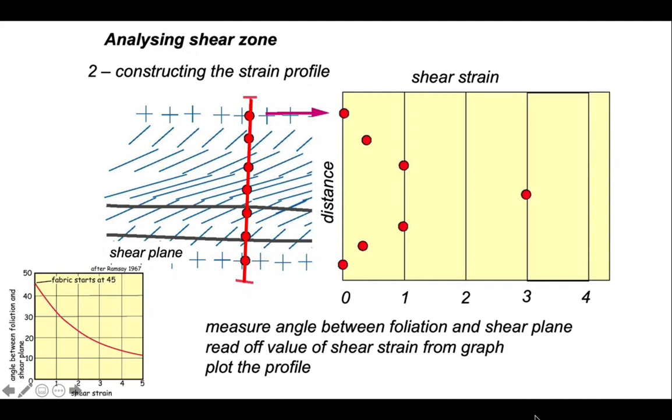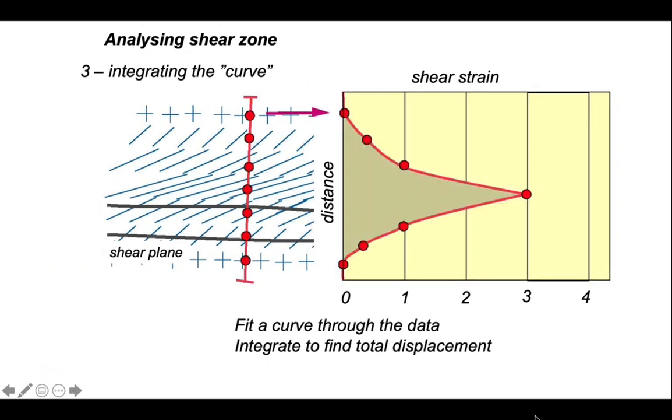So now we just have to construct the profile by joining up the dots. So we get a curve through the data and integrate it to find the total displacement. However, just think about what we've done here. This line joining the dots varies in shear strain value between the dots. Therefore, it implies that the shear strain varies continuously through the shear zone.